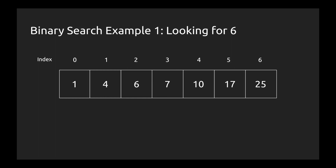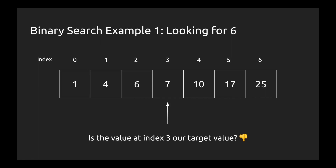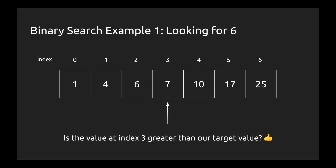Instead of starting at index 0 like we did in linear search, we start in the middle of our array — in this case, we start at index 3. We're then going to ask, is the value at index 3 our target value? No, it's not — that value is a 7, we're looking for a 6. Then we ask, is the value at index 3 less than our target value? No, it's not — 7 is greater than 6. Finally, we ask, is the value at index 3 greater than our target value? And yes it is — 7 is greater than 6.